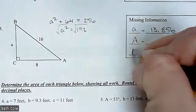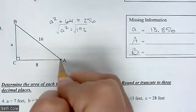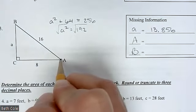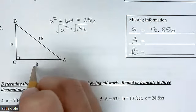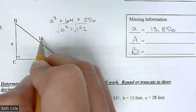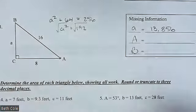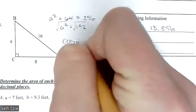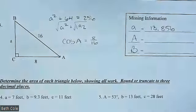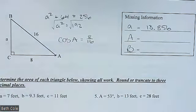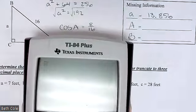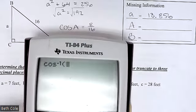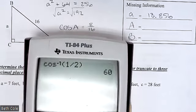We're going to find angles A and B. For angle A, it's your point of view. 8 is adjacent and 16 is the hypotenuse, so adjacent over hypotenuse is cosine. So cosine of A equals 8 over 16. To find the angle, you use inverse cosine — second cosine. 8 over 16 is one half, and I got 60 degrees.